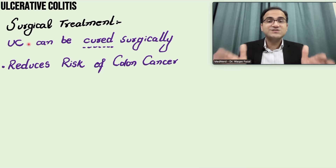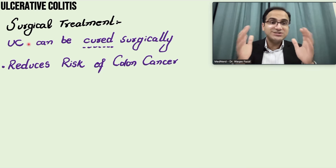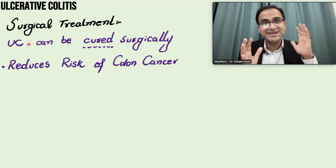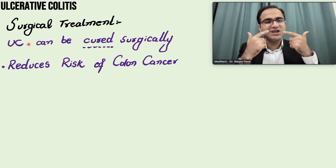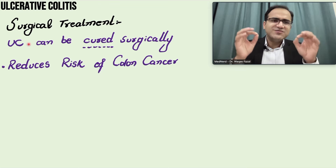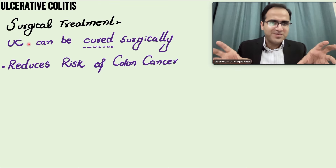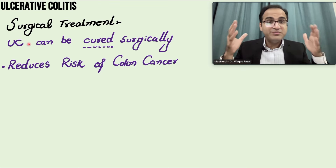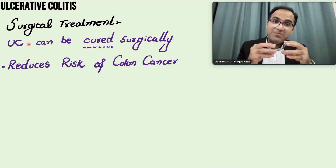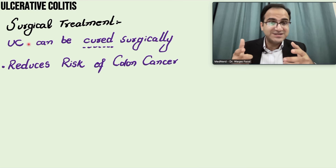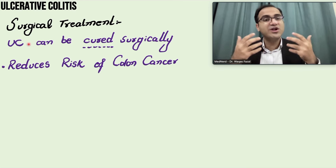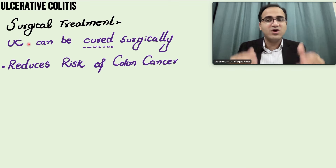Ulcerative colitis can be cured surgically — surgical treatment is curative, unlike Crohn's disease which involves the gut from mouth to anal canal. Ulcerative colitis only involves the colon, so if you remove the colon, the patient can be cured. Previously appendectomy was tried, but studies have shown that ulcerative colitis is cured by proctocolectomy — removal of the colon — which also reduces the risk of colon cancer.